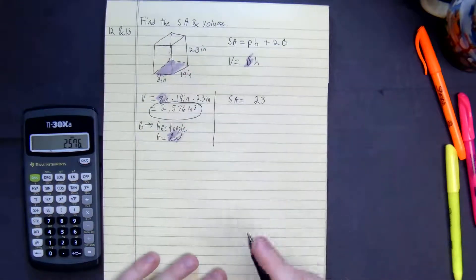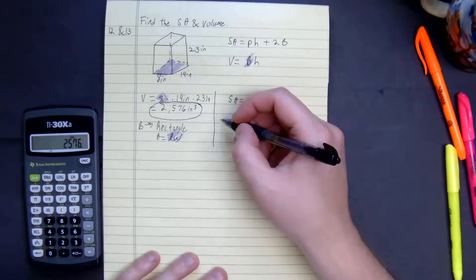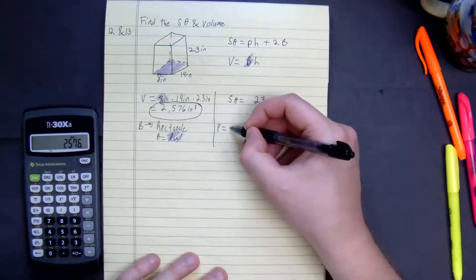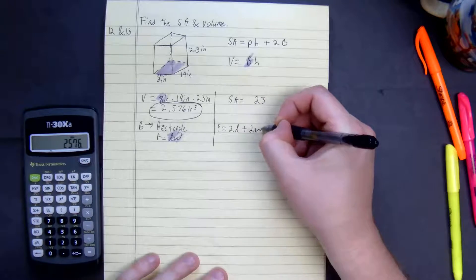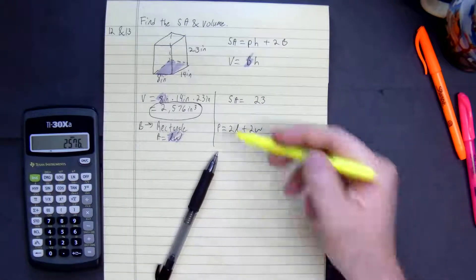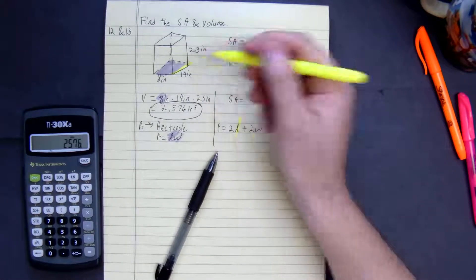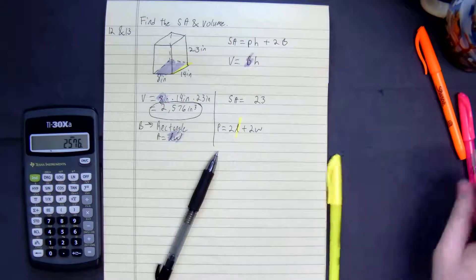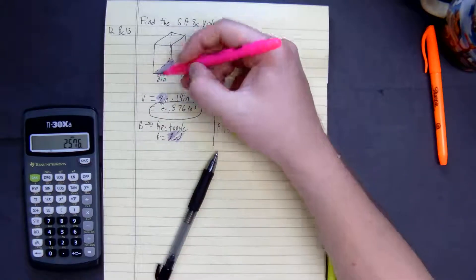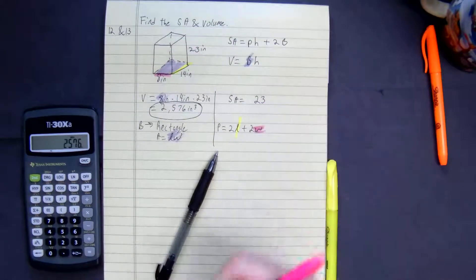Perimeter, it's a rectangle. So perimeter is equal to 2 times length plus 2 times width. We can say that our length right here is 14, and our width is going to be 8 inches.